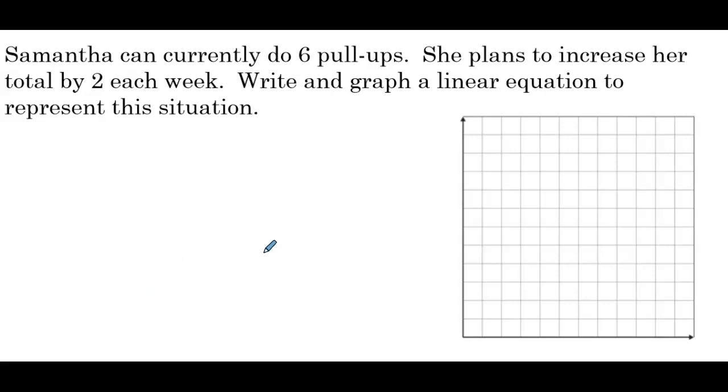Samantha can currently do six pull-ups. She plans to increase her total by two each week. Write and graph a linear equation to represent this situation. Okay, so she can currently do six pull-ups, and she's increasing her total by two each week. Okay, so based on the number of weeks, we're going up by two. So that's the value that's changing. So that's our slope. Our slope would be two.